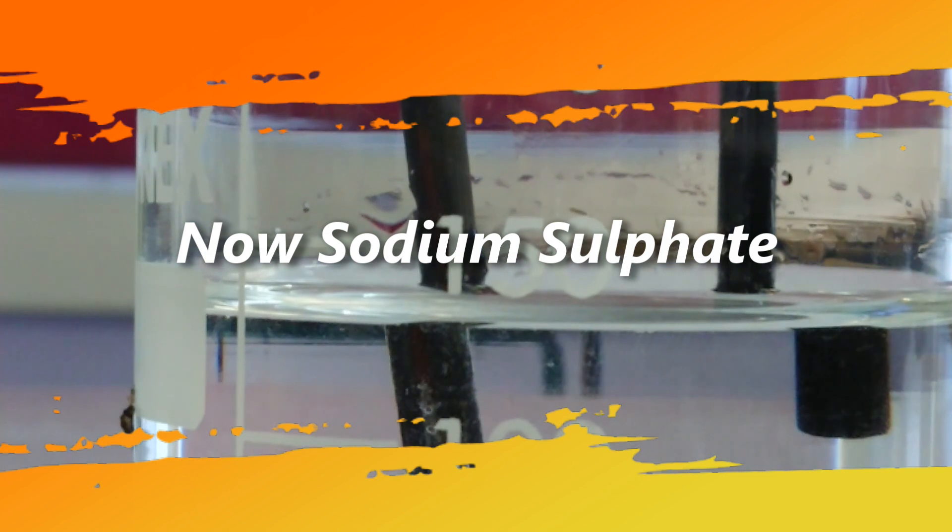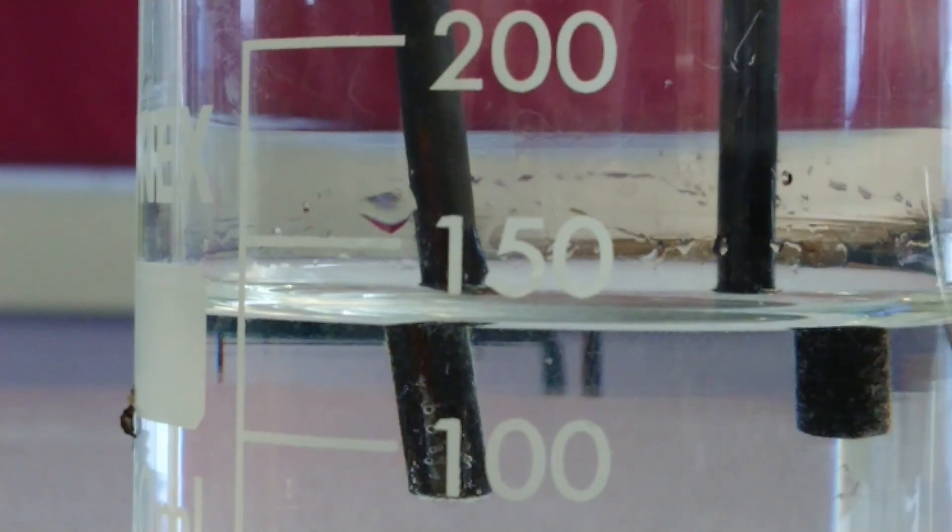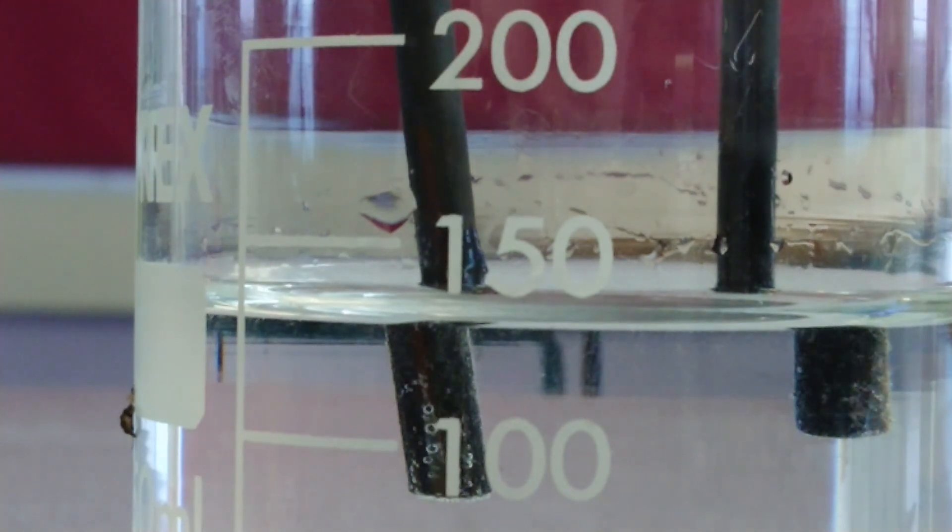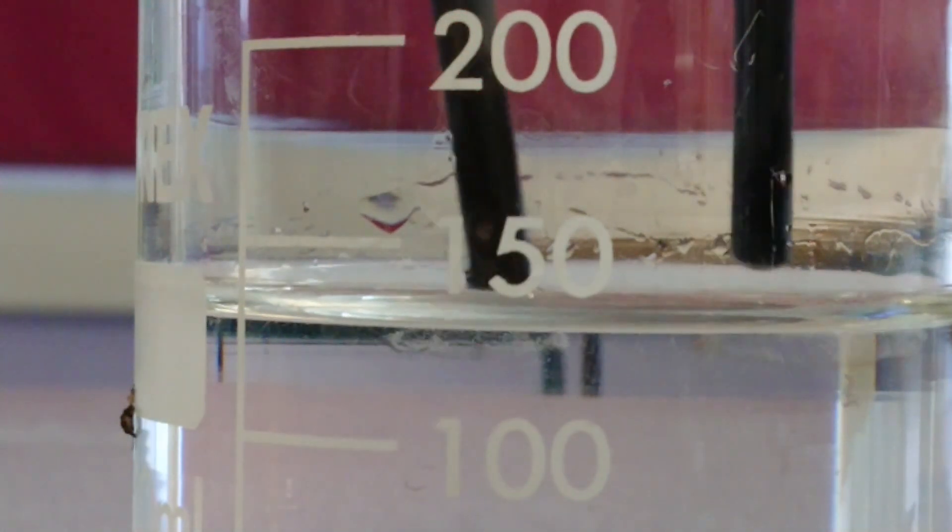So our final solution for today, the sodium sulfate. We can clearly see the bubbles coming off both the anode and the cathode. Let's test the gas at the anode and see what we've got.